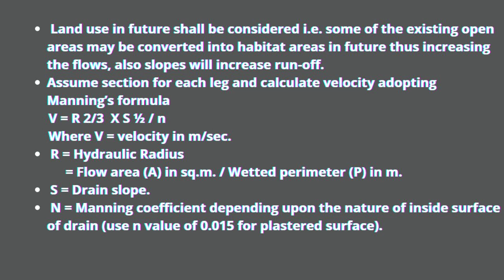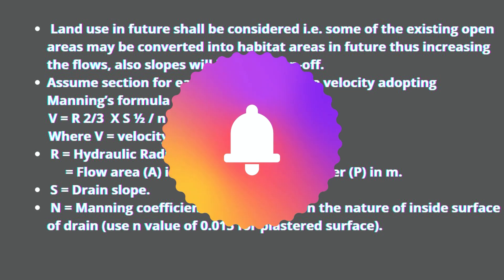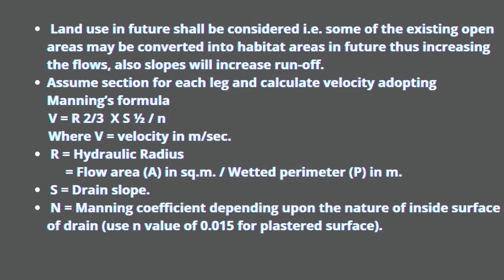Assume a section for each leg and calculate velocity using Manning's formula: V = (R^(2/3) × S^(1/2)) / N, where V is velocity in meters per second, R is the hydraulic radius (flow area A in square meters divided by wetted perimeter P in meters), S is the drain slope, and N is Manning's roughness coefficient depending on the inside surface of the drain. Use N = 0.015 for plastered surfaces, as the majority of drains are plastered with 12 mm or 20 mm thick plaster.